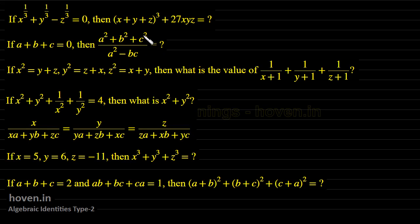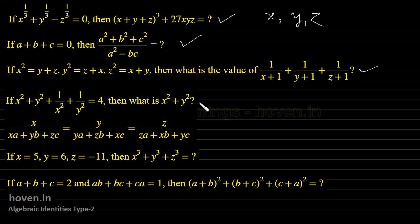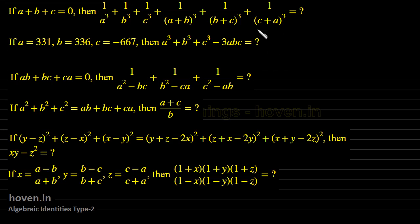Today we are going to take up all those questions which have three different types of variables like x, y and z. This is having three variables. This is also having three variables a, b and c. Some more questions also — these also we will take up today. They are having three variables a, b, c and so on as you can see.